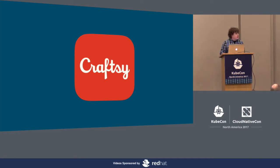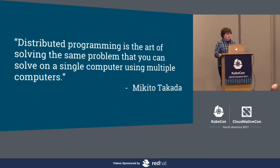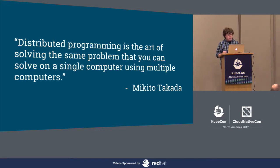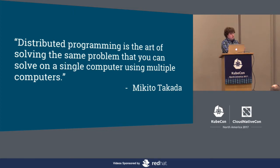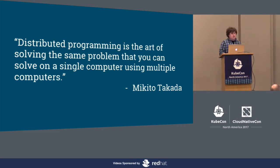I'm probably somebody's definition of DevOps — not mine, but somebody's. I'm big on definitions, so let's start off with: what's a distributed system? In 'Distributed Systems for Fun and Profit,' Makito Takata says distributed programming is the art of solving the same problem that you can solve on a single computer, using multiple computers. A distributed systems problem is a problem that's gotten too big for one computer. We can say a distributed system is several nodes, components, pieces working together to accomplish the same goal.